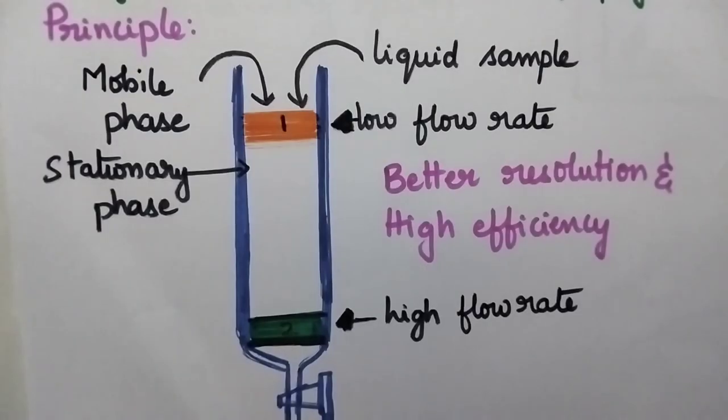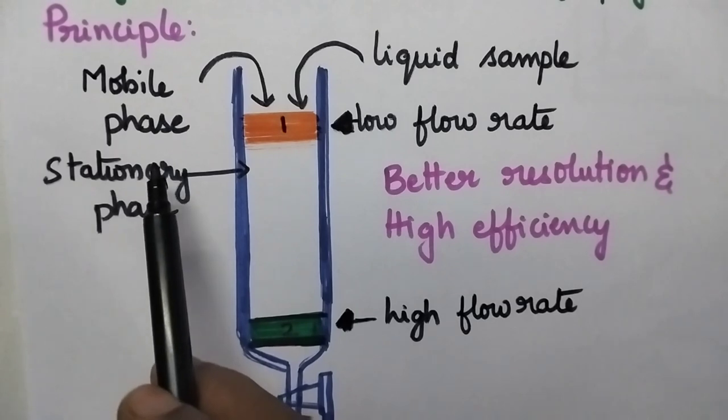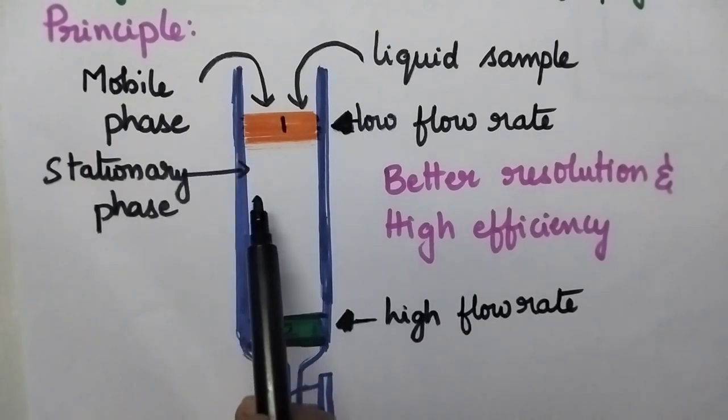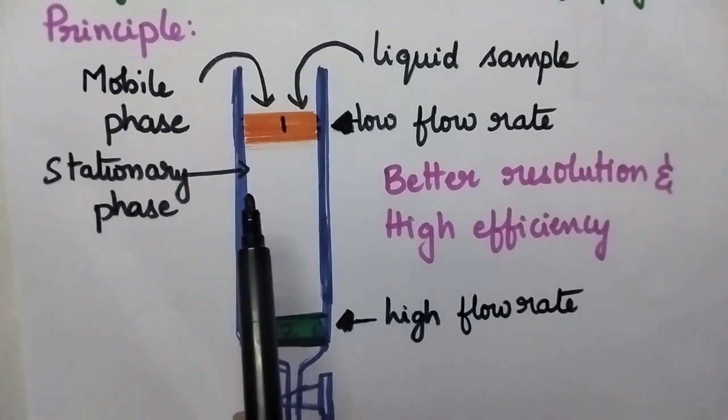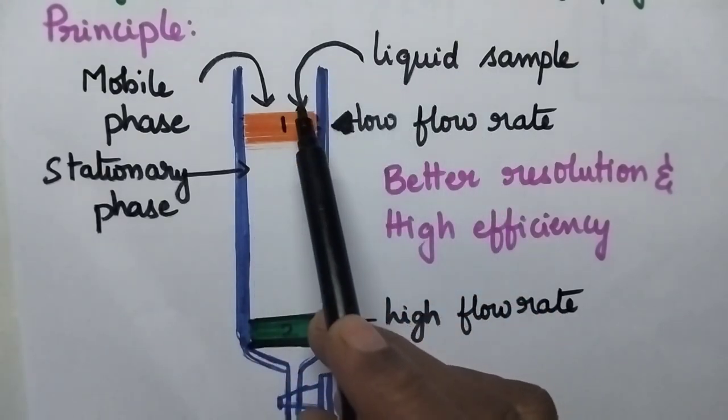Coming to the principle involved in HPLC, it consists of a column containing a stationary phase. Initially the mobile phase is continuously injected into the stationary phase. At this moment the liquid sample is injected into the column.